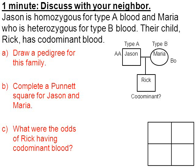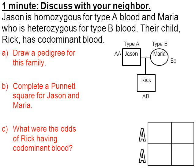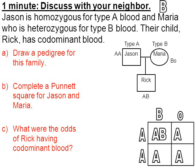Rick has codominant blood, which means he has one dominant A and one dominant B allele. Setting up the Punnett square for Jason (AA) and Maria (BO), we can see that the odds of Rick having codominant AB blood were 50%. That completes the pedigree and Punnett square for this family.